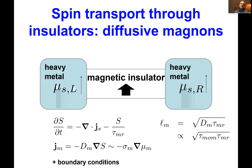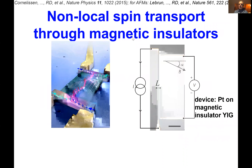In principle you could include both temperature and chemical potential, but here I've taken only the chemical potential. This describes the bulk; at the interfaces you connect to the leads via boundary conditions formulated in terms of an interface resistance associated with the process of converting electron spins into magnons on the other side.